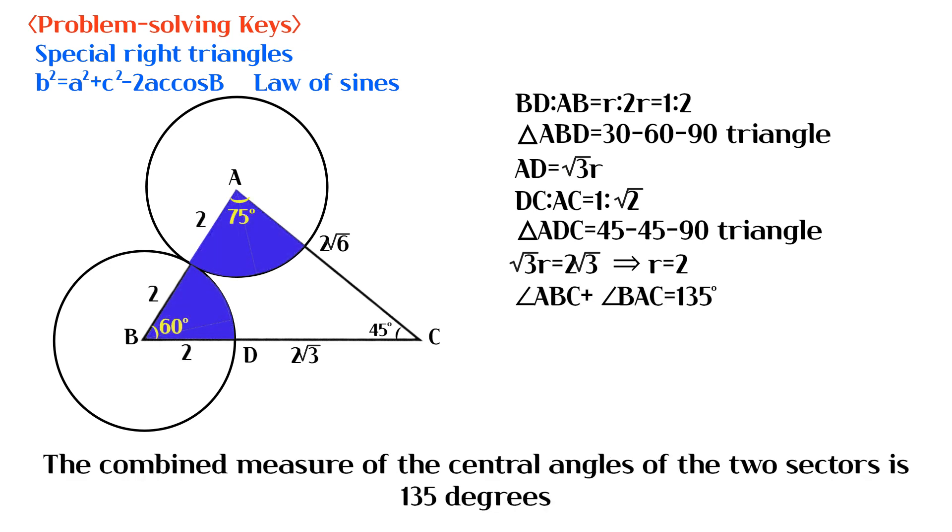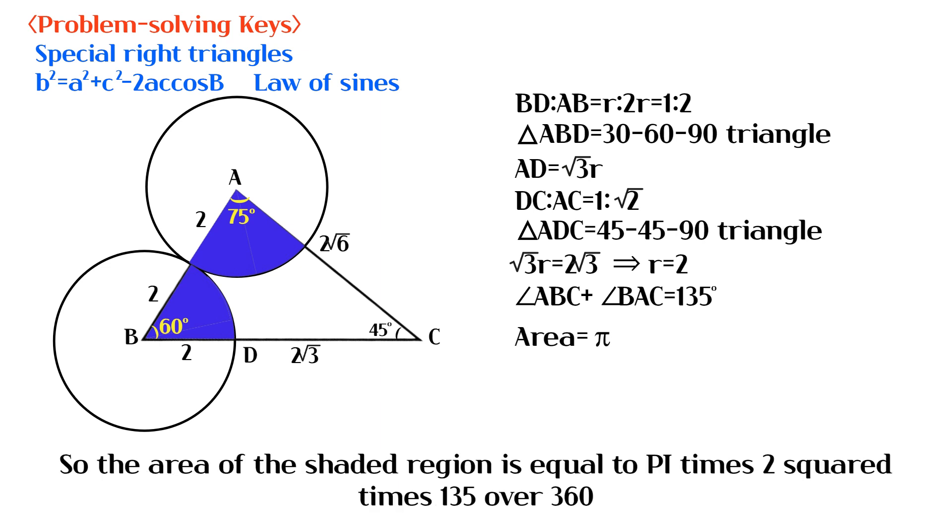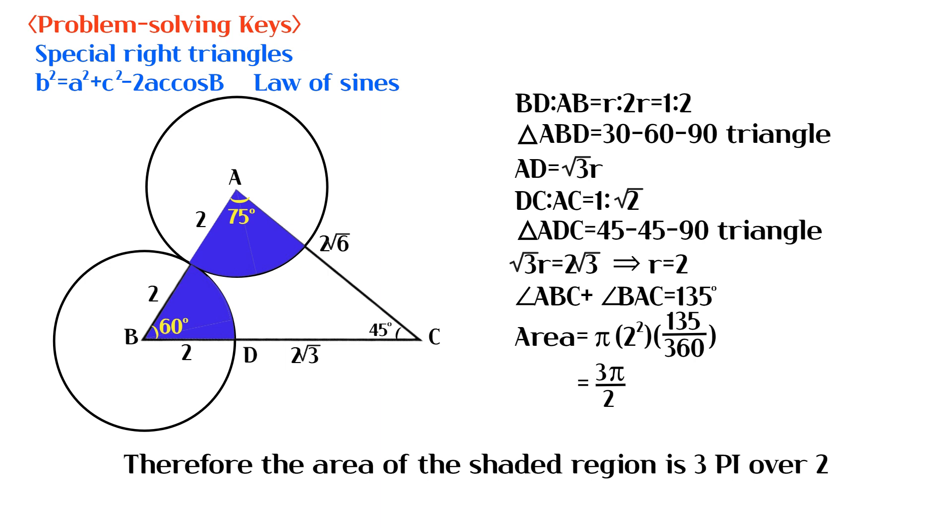The combined measure of the central angles of the two sectors is 135 degrees. So the area of the shaded region is equal to π times 2 squared times 135 over 360. Therefore, the area of the shaded region is 3π/2.